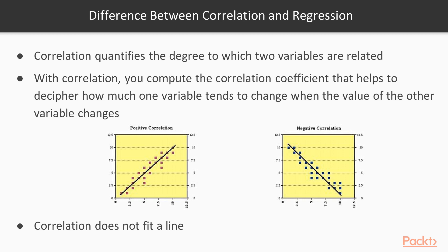Difference between correlation and regression: Correlation quantifies the degree to which two variables are related. The correlation coefficient helps decipher how much one variable tends to change when the other changes. Positive correlation is when two variables move in tandem — if one increases, the other increases as well. Negative correlation is when the two variables do not move in tandem — if one increases, the other decreases. In negative correlation, the variables move in inverse or opposite directions.